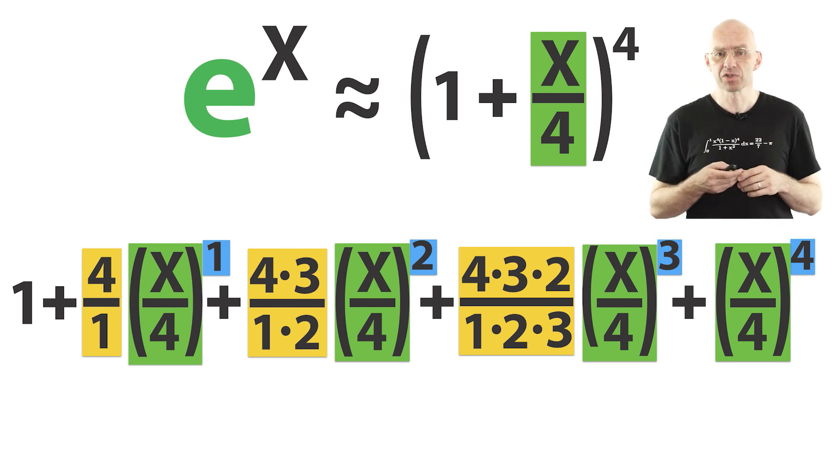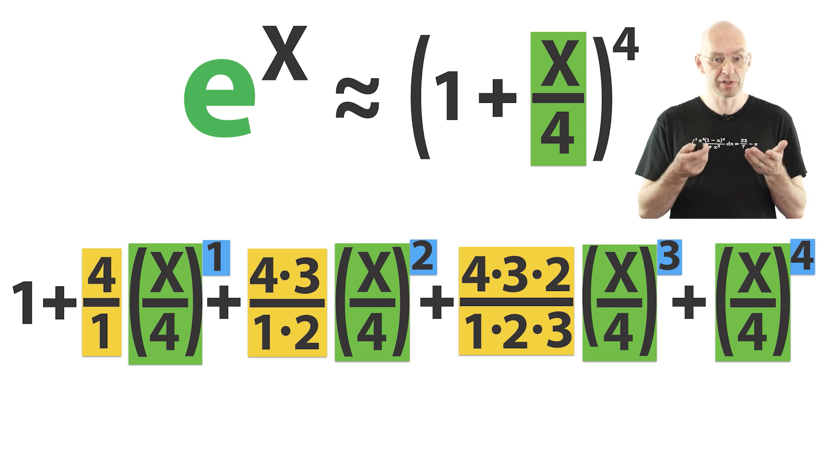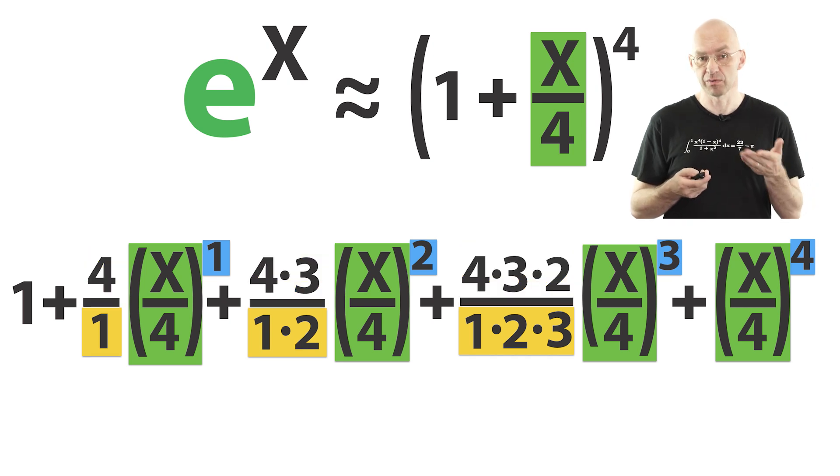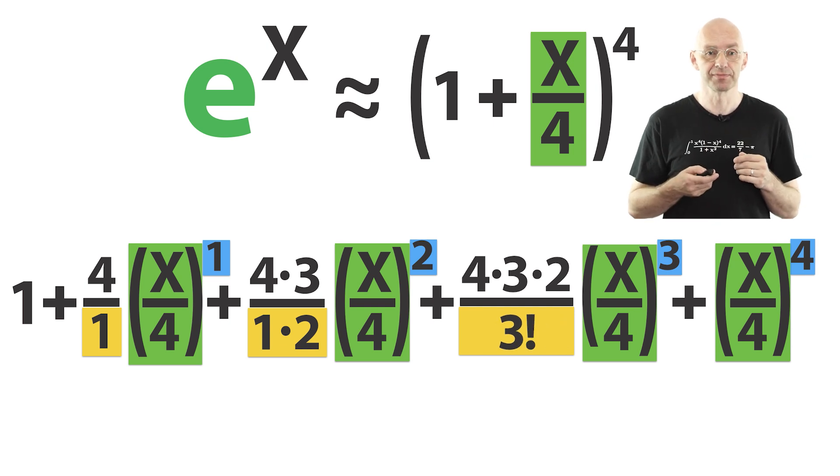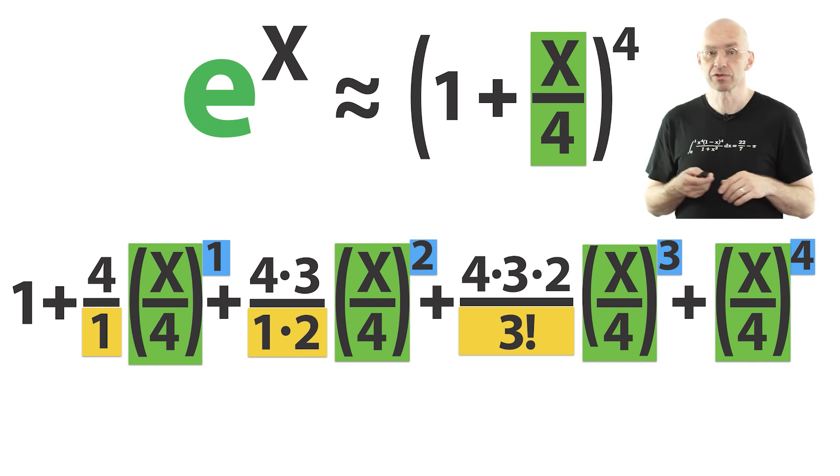But before we carry on, just a reminder that there is a special way to write and refer to the denominators: 1, 1 times 2, 1 times 2 times 3 and so on. For example, 1 times 2 times 3 is written 3 exclamation mark, and it's called 3 factorial. And there we have 1 and 2 factorial.